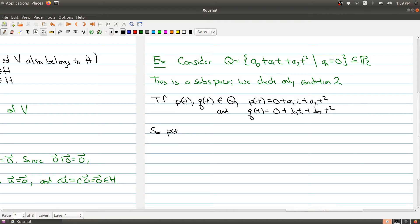So when we add these two guys together, we get zero plus the coefficient of t, A1 plus B1 times t, plus A2 plus B2 times t squared. And notice that here we still have zero constant term.